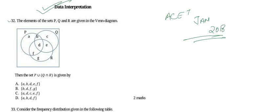Let us start with question number 32. The elements of sets P, Q, and R are given in a Venn diagram. We need to find P union (Q intersection R). In the bracket we have Q intersection R, so let us first find that part. Q intersection R is this shaded part in the diagram.